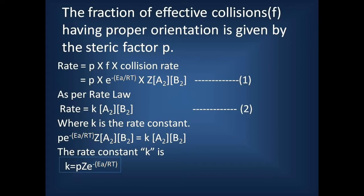The next factor is the steric factor. The fraction of effective collisions having proper orientation is given by the steric factor P. The rate equals P × f × Z × [A] × [B]. Substituting f = e^(−Ea/RT), we get: rate = P × Z × e^(−Ea/RT) × [A] × [B]. Equating this with the rate law, the rate constant k = P × Z × e^(−Ea/RT).